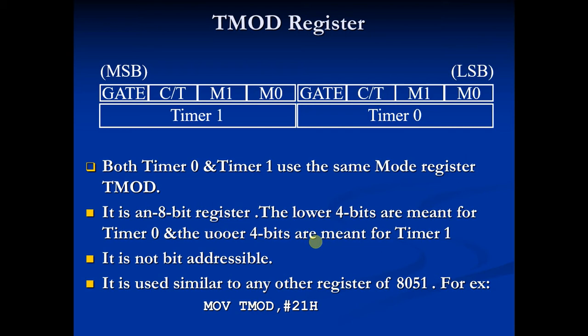The timer and counter register has two basic SFRs: the timer control register and the T-Mode register. The T-Mode register is an 8-bit register divided into two groups — Timer 0 and Timer 1. The lower 4 bits are meant for Timer 0 and the upper 4 bits are meant for Timer 1. It is not bit addressable; it is byte addressable, so we have to write bytes while coding.